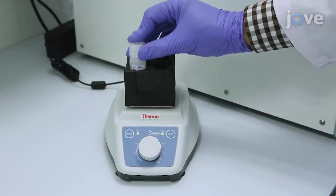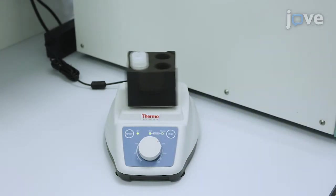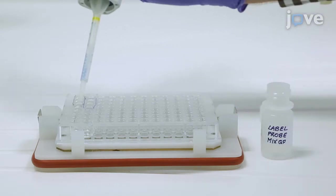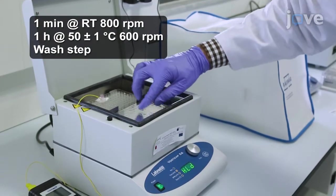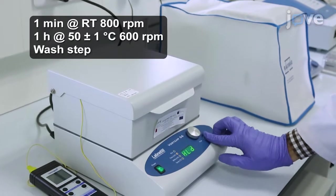Now vortex the label probe for 10 seconds at maximum speed. Then add 50 microliters of label probe to each well. Then reseal the plate and repeat the shaking incubation as before followed by another wash step.